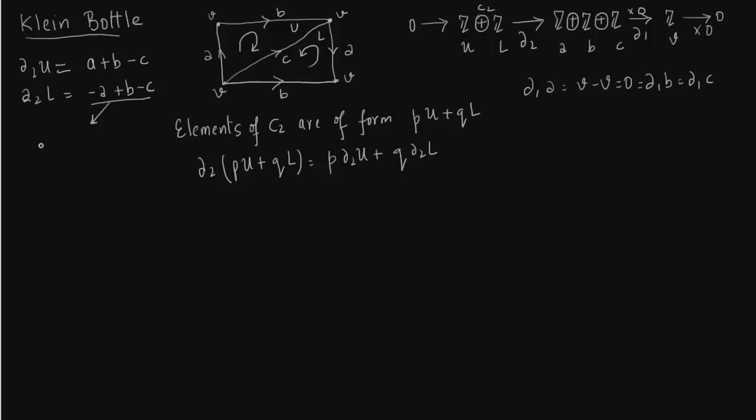So now we want to change this basis to make calculation easier. So delta 2 U, obviously one basis we can't change. One basis we have to keep as it is. So we will keep delta 2 U. The second basis we will say it is a linear combination of delta 2 U and delta 2 L. So basically I will say delta 2 U minus delta 2 L. So I have changed the basis.